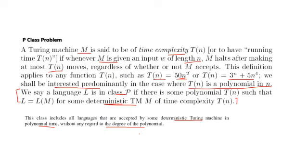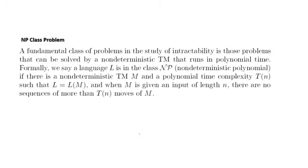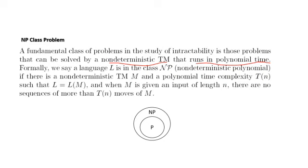Since we have a P-class problem, similarly we have an NP-class problem. The P-class problem is accepted by a deterministic Turing machine T(n), whereas NP is accepted by a non-deterministic T(n) machine that runs in polynomial time. Both run in polynomial time — one is deterministic, the other is non-deterministic. When a problem is accepted by a deterministic T(n) machine, it can also be accepted by a non-deterministic T(n) machine. So we can safely say that P is a subclass of NP.